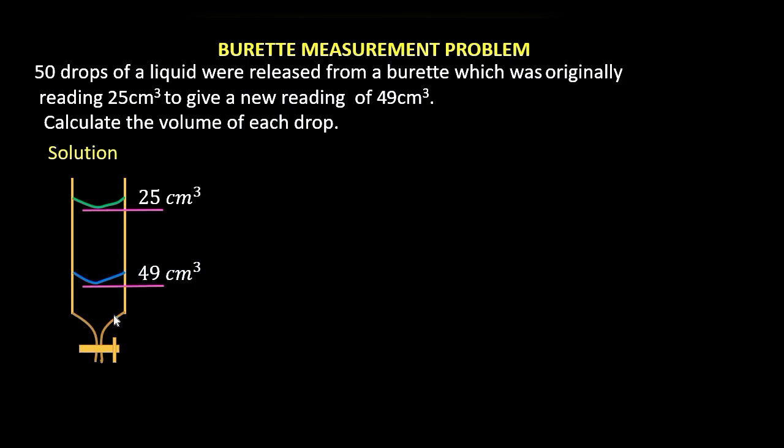determine the volume of the drops which were run out, we'll simply get the difference between these two readings. And therefore, the volume released is 49 minus 25, and that is 24 cubic centimeters.